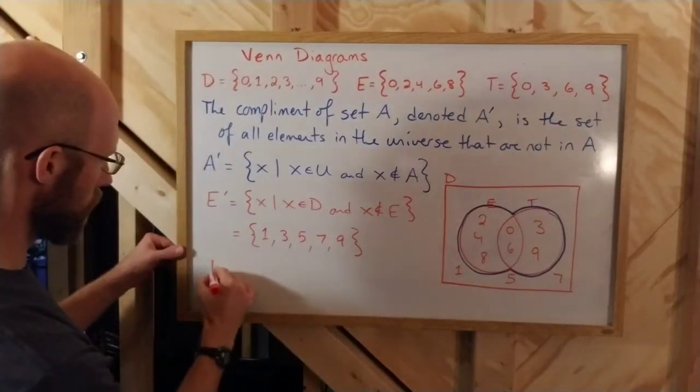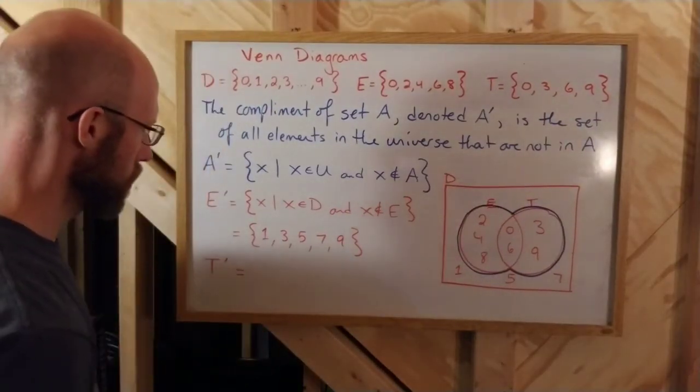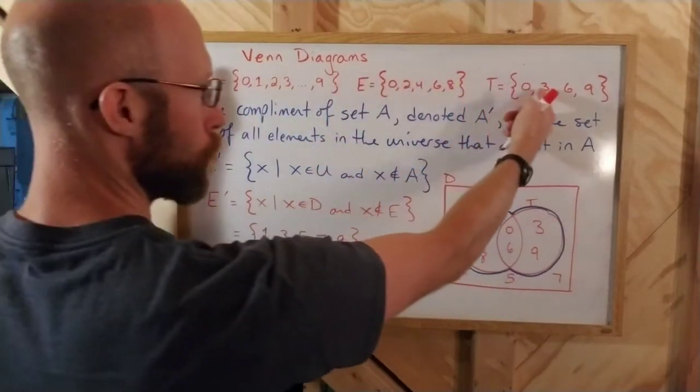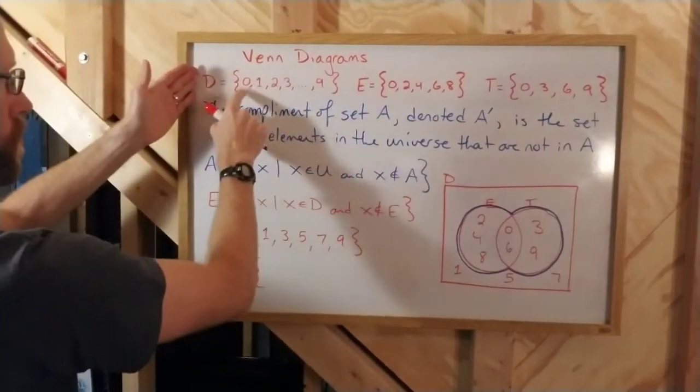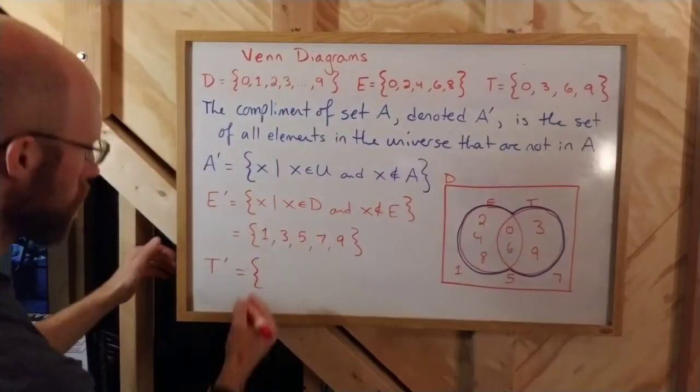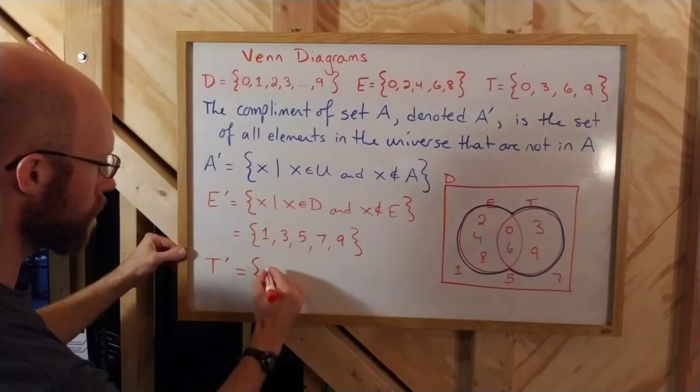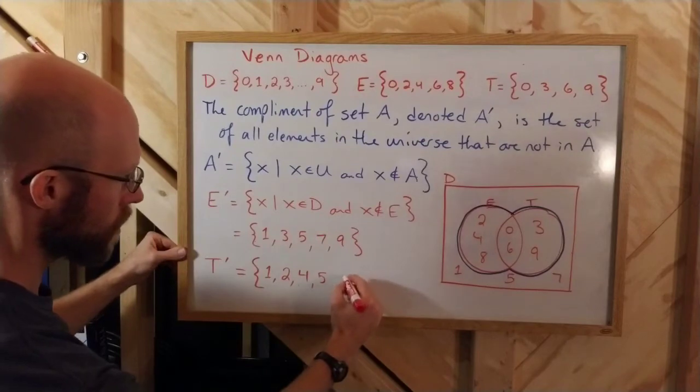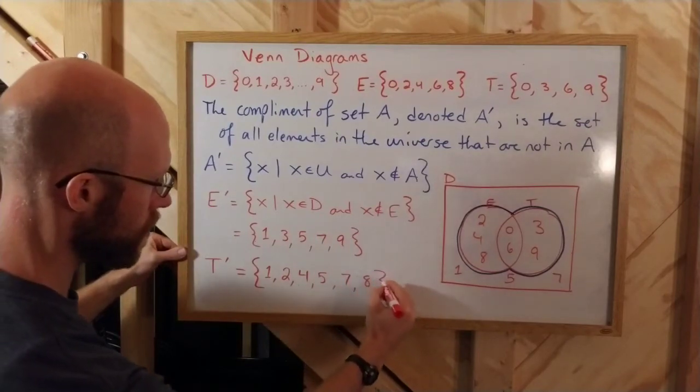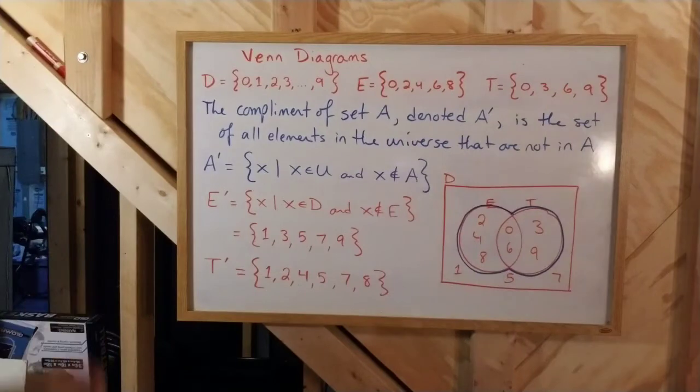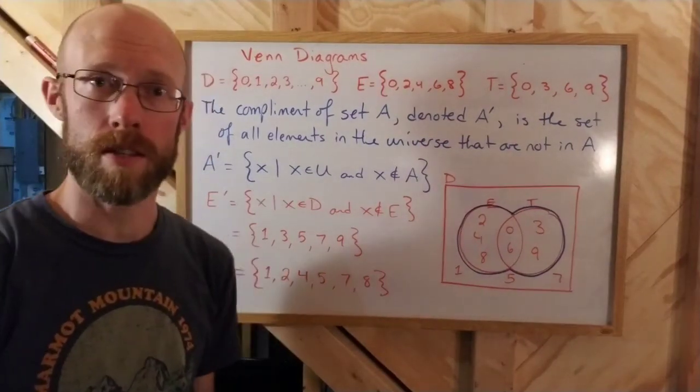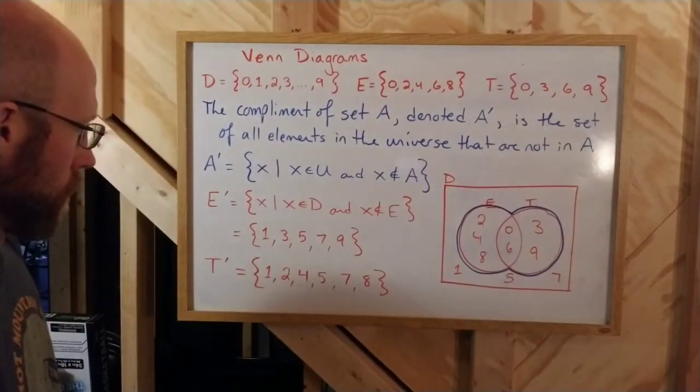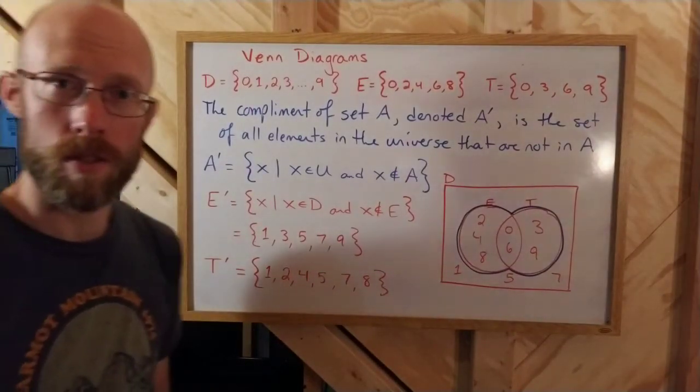Let's take a look at the complement of T. Complement of T, again, if you look at the universe, you pull out all of the T's. So 0's out, 3's out, 6, and 9, you would end up with 1, 2, 4, 5, 7, 8. That's everything except 0, 3, 6, 9. That's interesting. That'll work.